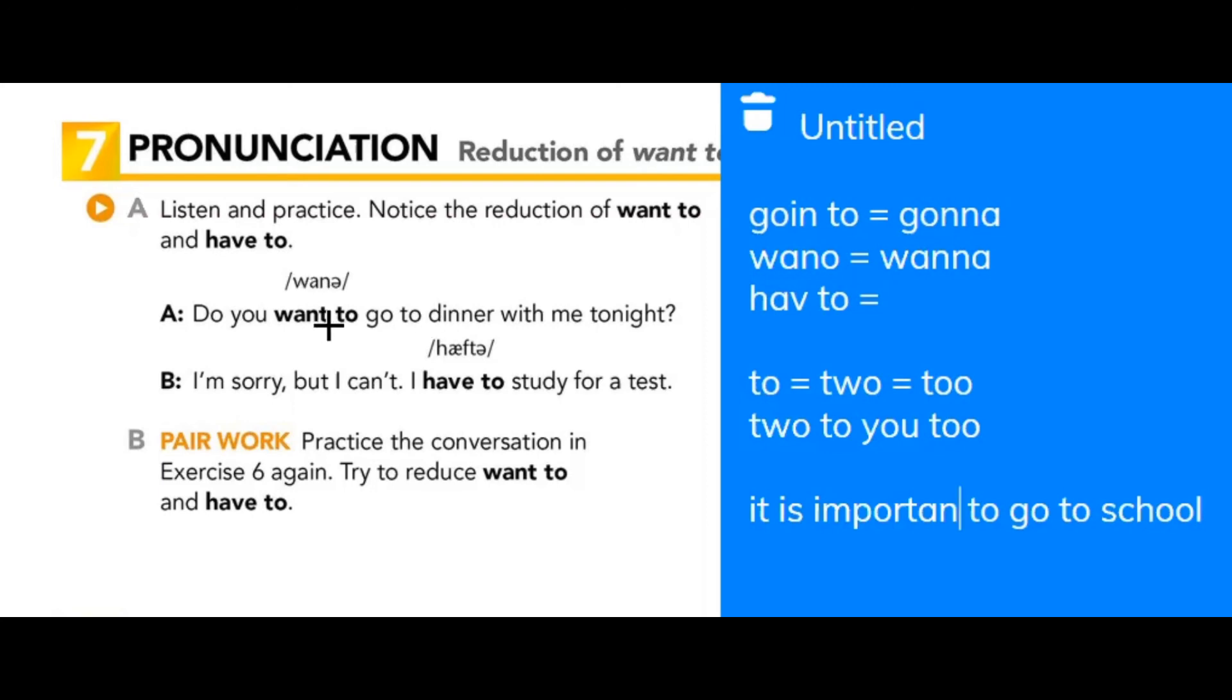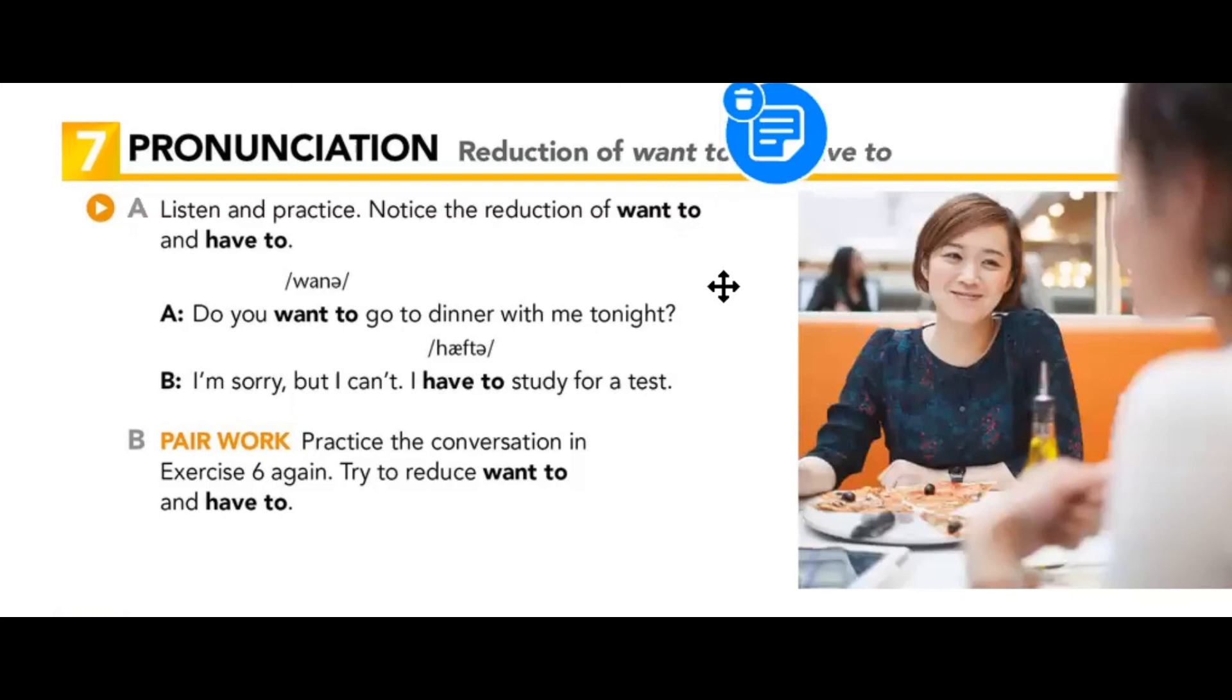Então esse to aqui, ele de uma forma ou de outra, ele vai ficar muito fraquinho. Então lembrando, o que a gente tá falando são reduções. Significa que em teoria ela só aparece na oralidade, se não vai escrever. Você vai ter que escrever want to, have to. Só na hora de pronunciar é que a gente vai fazer essas mudanças. Então agora vocês vão ouvir e tentar prestar atenção nisso.